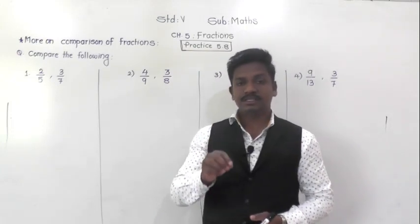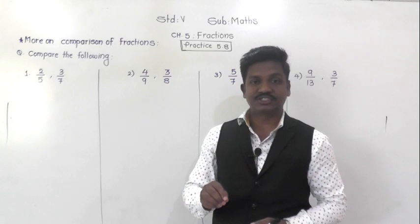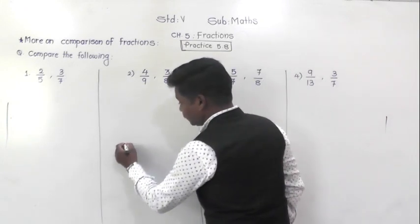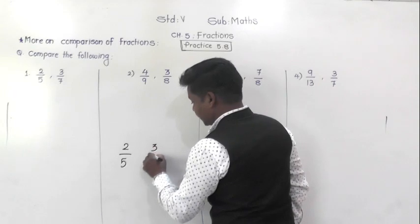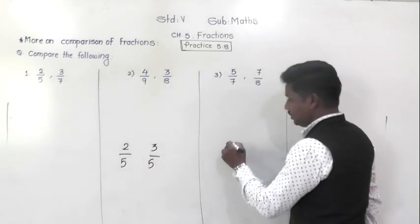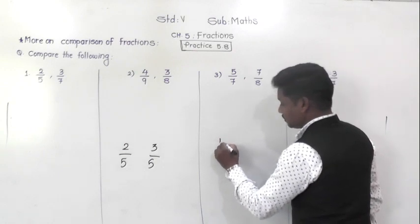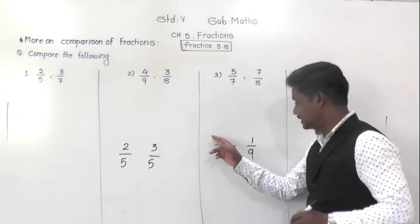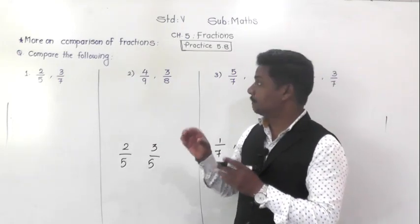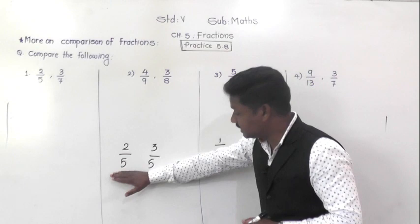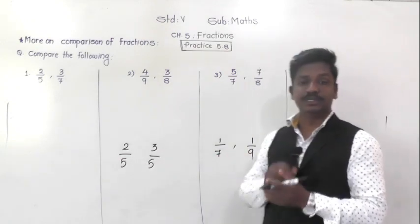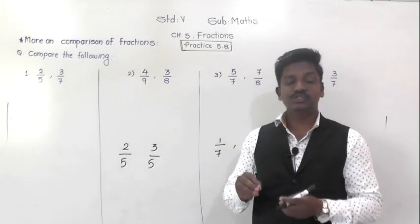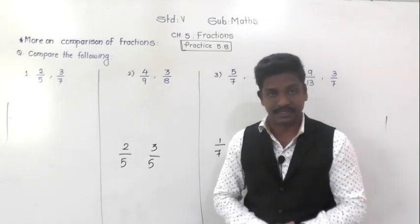Before vacation we learned comparison of fractions having either the same denominator or the same numerator. For example, fractions like 2/5 and 3/5 have the same denominator, or fractions like 1/7 and 1/9 have the same numerator. Today we are going to learn comparison of fractions whose denominators as well as numerators are totally different.